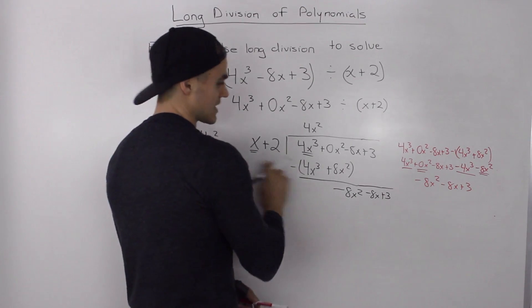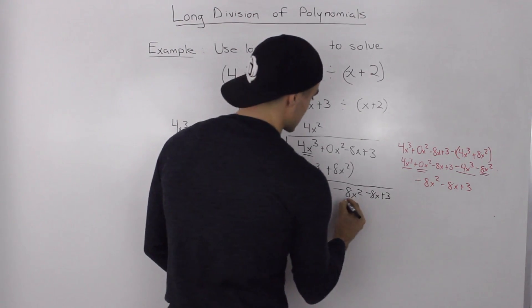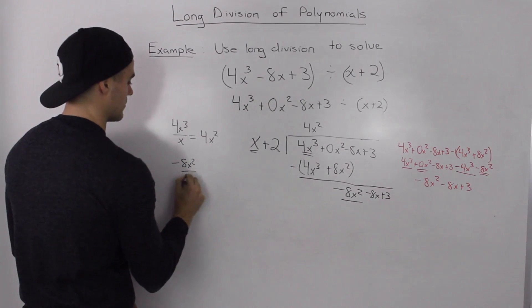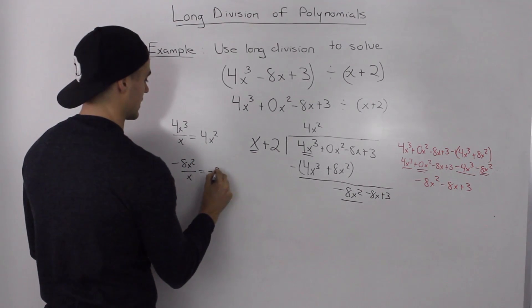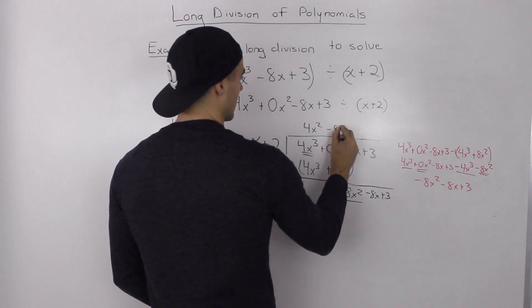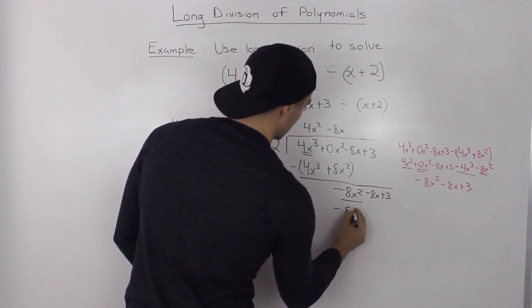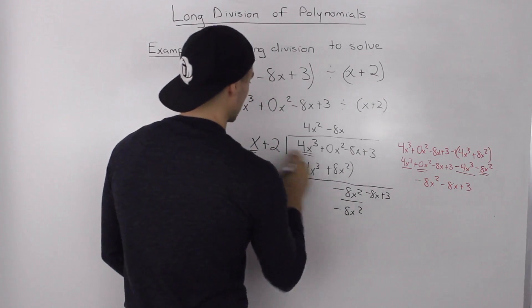So, now we check how many times does x go into negative 8x squared. So, negative 8x squared divided by x, that ends up giving us negative 8x. So, negative 8x goes here. Negative 8x times x is negative 8x squared. Negative 8x times 2, that's negative 16x.